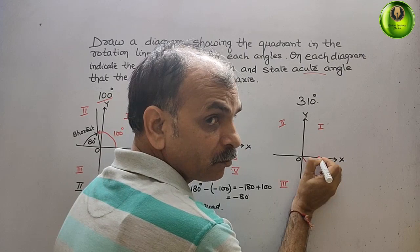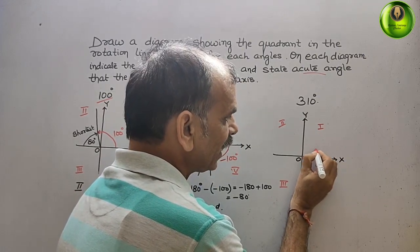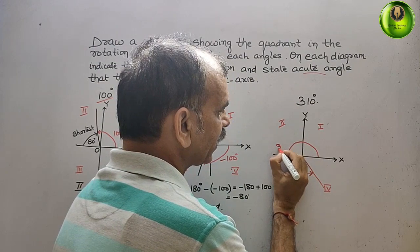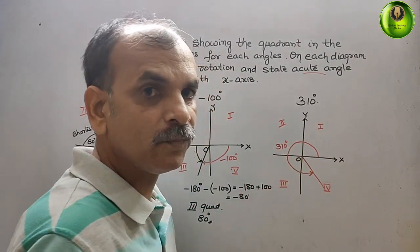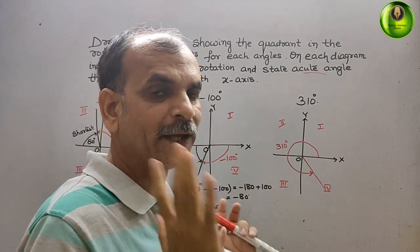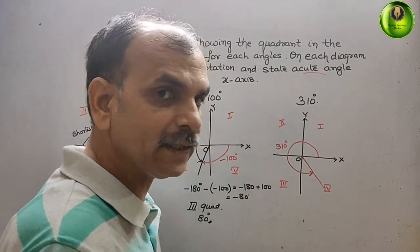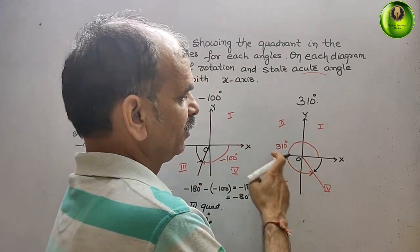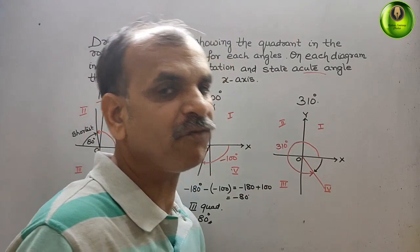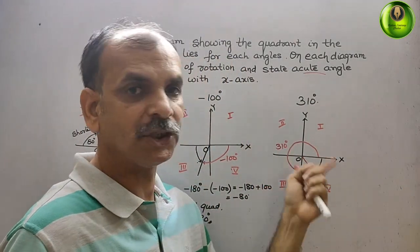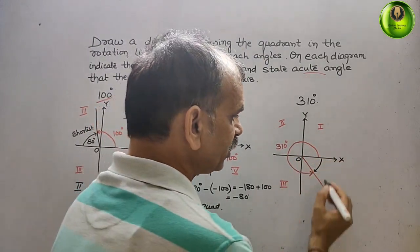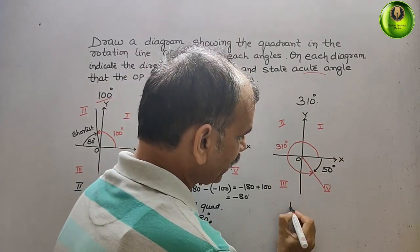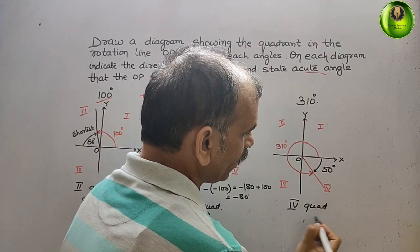The angle arc starts from the positive X-axis in the anti-clockwise direction and ends at the OP line at 310 degrees. To find the acute angle: 310 plus 50 equals 360 degrees total, so the remaining angle from the line to the positive X-axis is 50 degrees. We write: it lies in the fourth quadrant and the acute angle is 50 degrees.